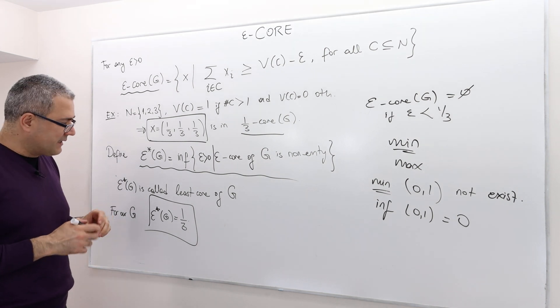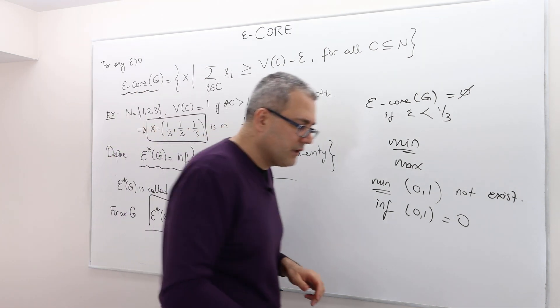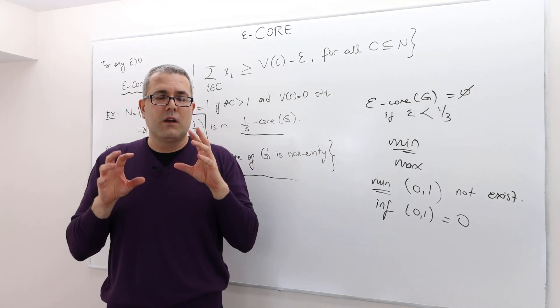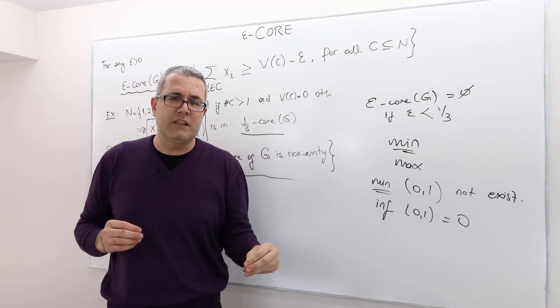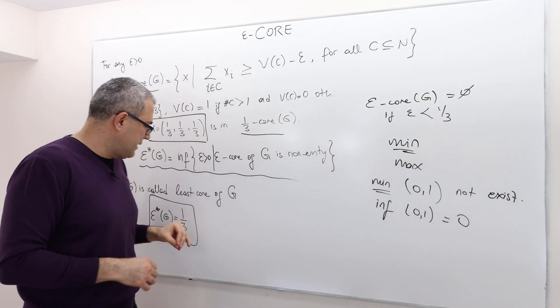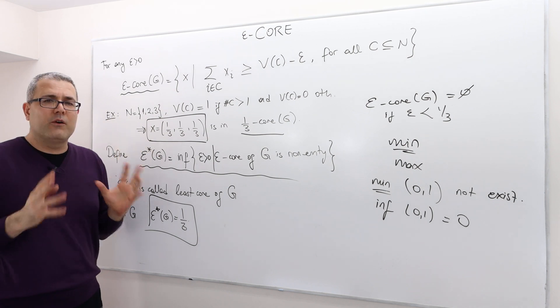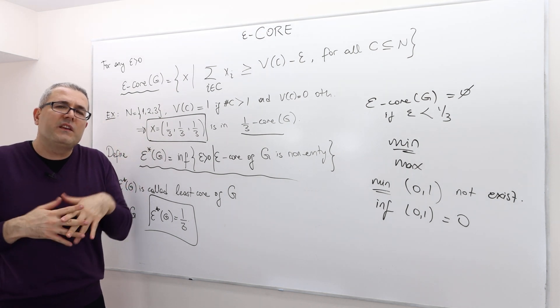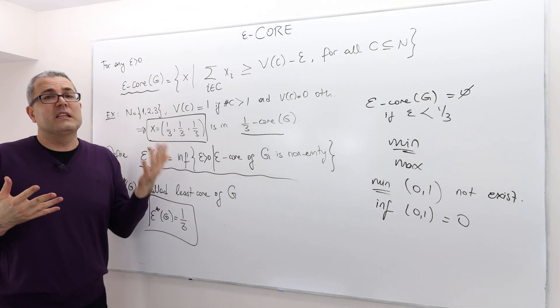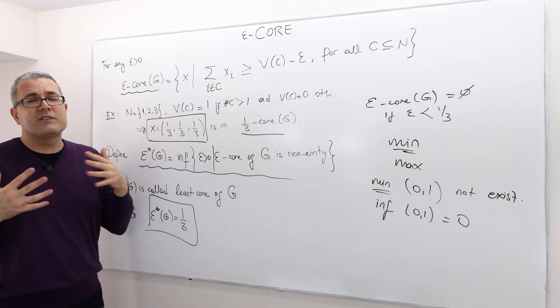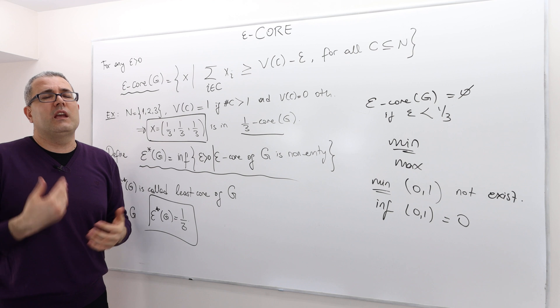It's not the perfect solution in the sense that some coalitions still have incentive to deviate, but at least we can find a payoff vector and some outcome where the incentive to deviate is the least, in a sense. That's what the epsilon core is aiming to capture.